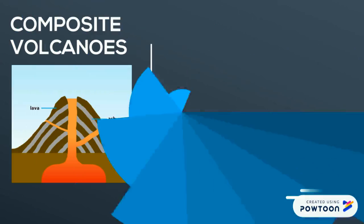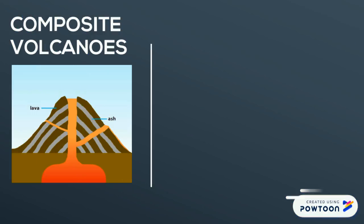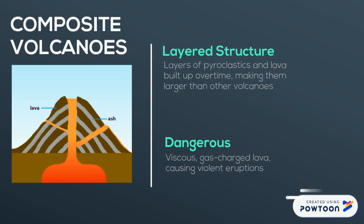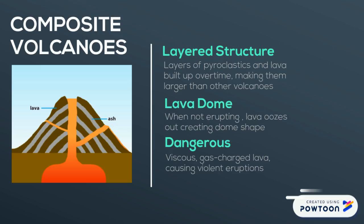Lastly, there are stratovolcanoes, or composite volcanoes, which are talked about on page 98 of the textbook. These are built up in layers of different materials. They are larger than cinder cone volcanoes because they have a mixture of lava and pyroclastics. They are usually considered the most dangerous type of volcano. They are fairly viscous, gas-charged, and have andesitic lava. When not erupting, lava oozes out and creates lava domes.